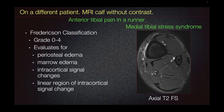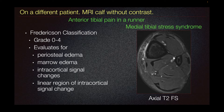This is a different patient who had an MRI of the calf without contrast — a runner presenting with anterior tibial pain. We use the Fredrickson classification when evaluating for medial tibial stress syndrome. The Fredrickson classification is graded 0 to 4 and evaluates for periosteal edema, marrow edema, any intracortical signal changes, or the presence of a linear region of intracortical signal change.